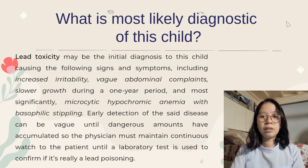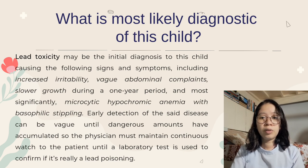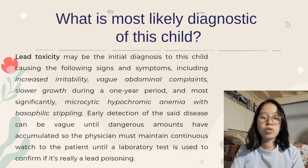What is the most likely diagnosis in this child? Lead toxicity is the most likely diagnosis, causing symptoms including increased irritability, vague abdominal complaints, slower growth over a one-year period, and most significantly, microcytic hypochromic anemia with basophilic stippling. Early basophilic stippling can be subtle until dangerous amounts have accumulated, so the physician must maintain continuous monitoring of the patient until laboratory tests confirm lead poisoning.